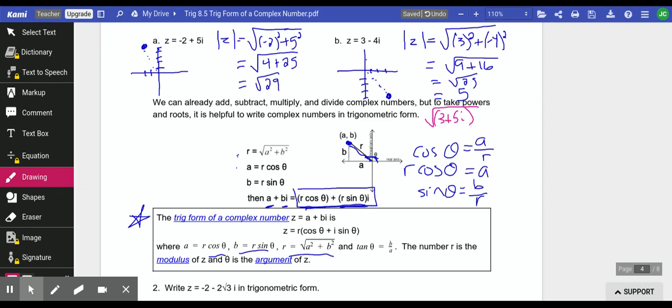This reminds you what a is and what b is and how to find r. Also remember that the tangent of our angle is b over a, from this triangle. The tangent is opposite over adjacent. The number r is called the modulus of z, and theta is called the argument of z. I do not use those words, but if they pop up in your homework, I wanted you to have seen them before.